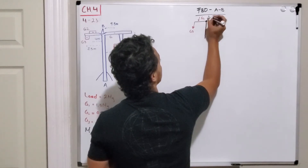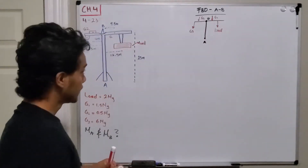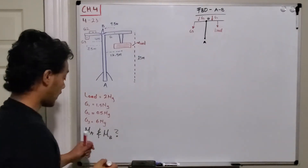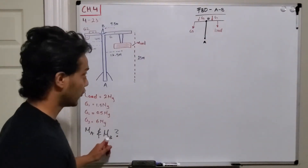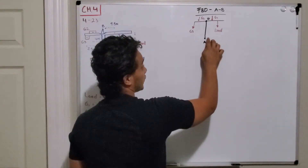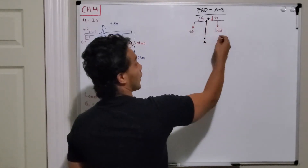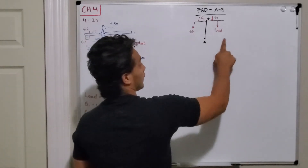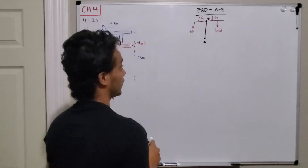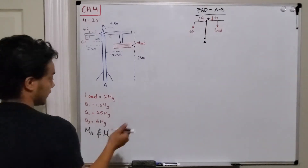By intuition, the moment about point A and the moment about point B are going to be the same. Why? Because the difference between point A and point B is in the y-direction, and we don't have any forces in the x-direction. Therefore, these two moments are going to be the same.